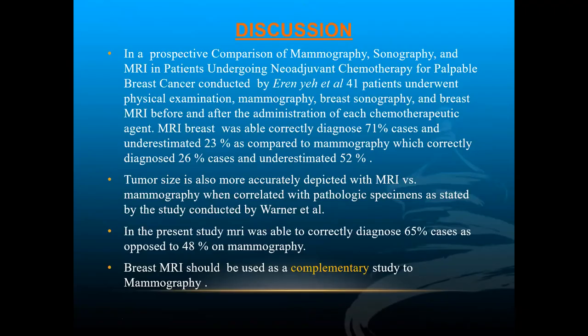Regarding discussion: In a prospective comparison of mammography, sonography, and MRI, a study by Iram et al. on 41 patients who underwent physical examination, mammography, breast sonography, and breast MRI before and after chemotherapy administration found MRI was able to correctly diagnose 71% of cases versus 23% for mammography. Tumor size was also more accurately depicted with MRI. In the present study, MRI correctly diagnosed 65% of cases versus 48% on mammography.